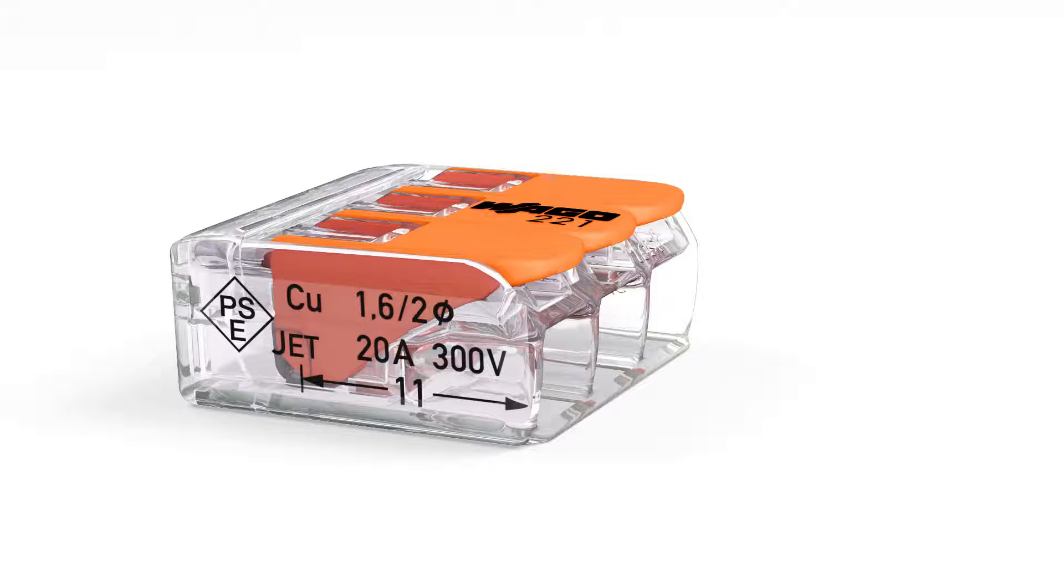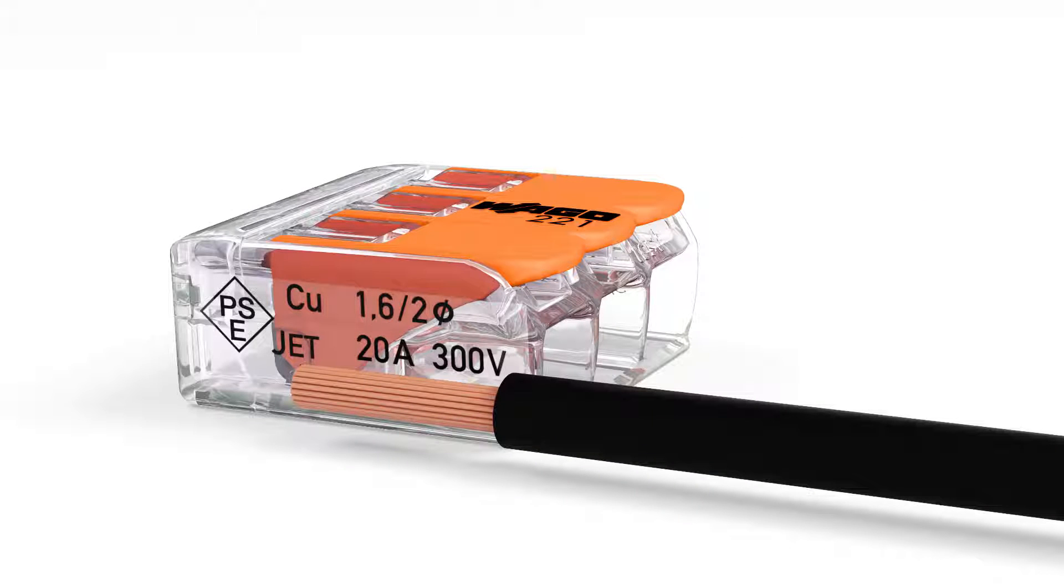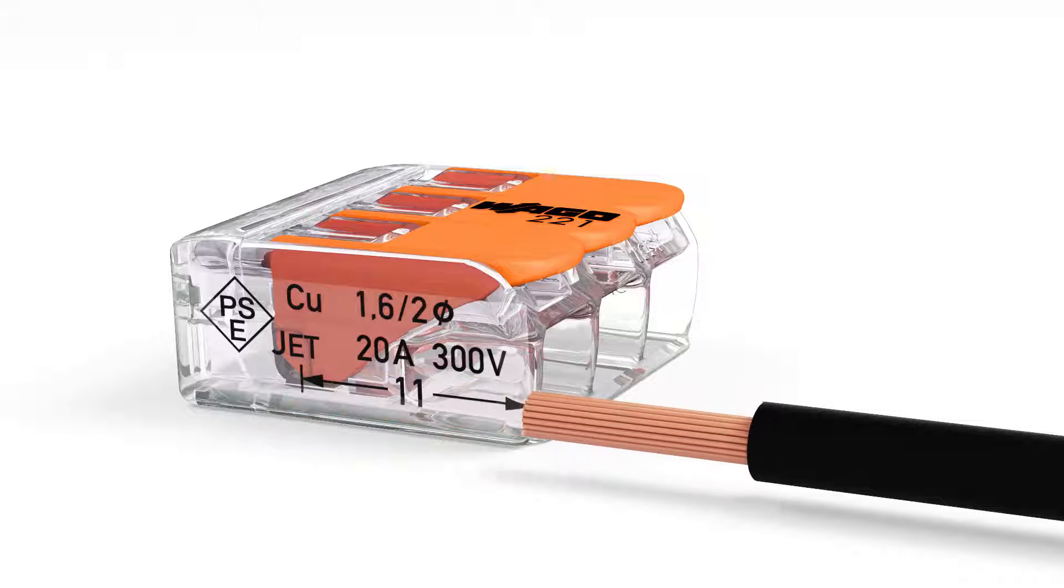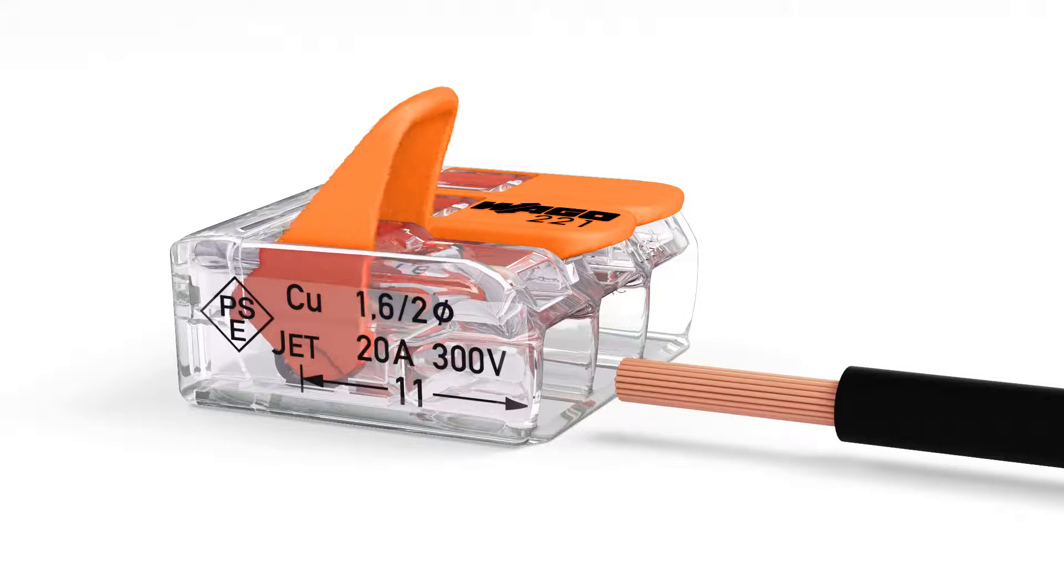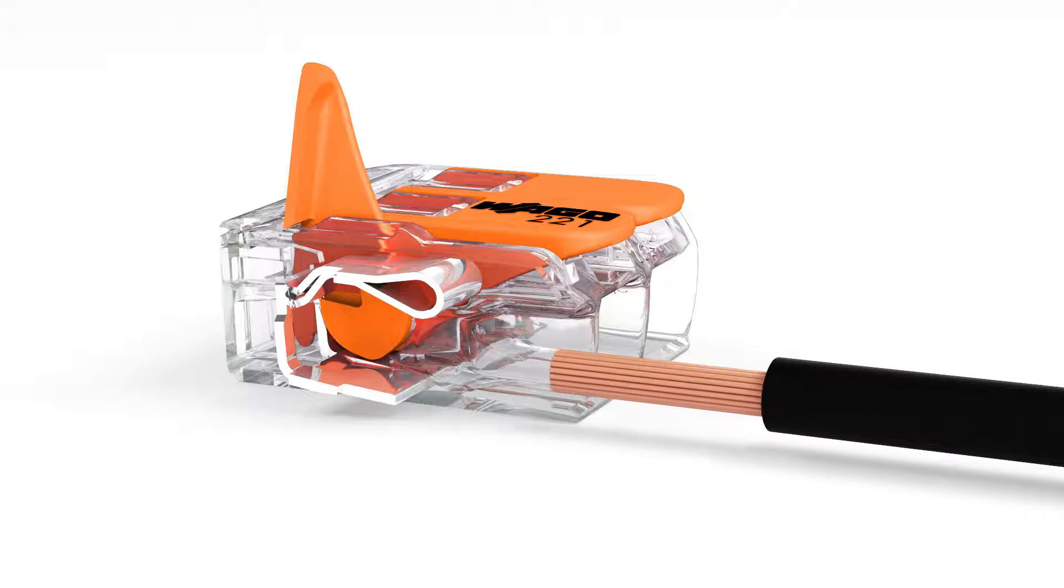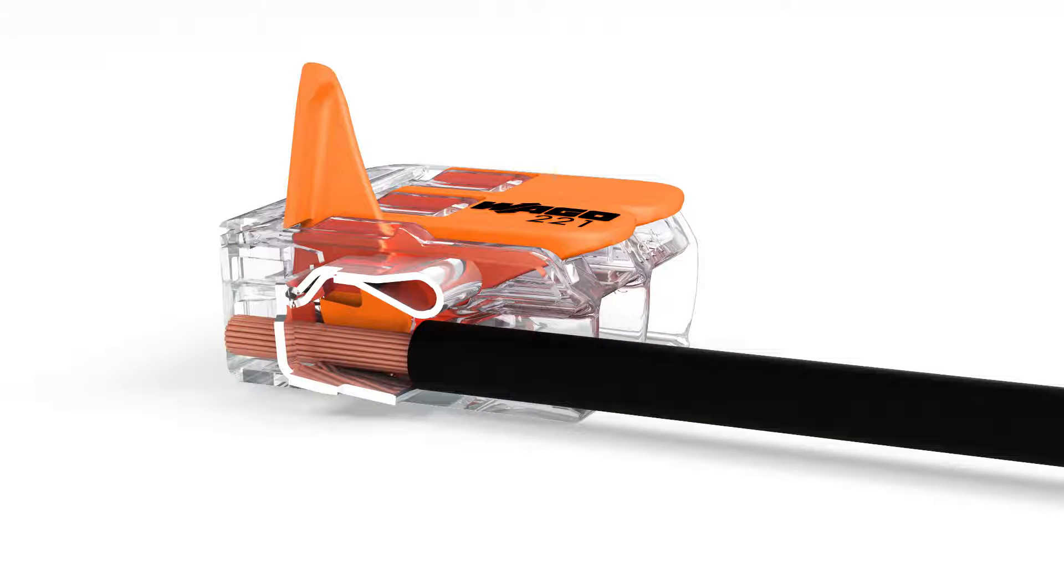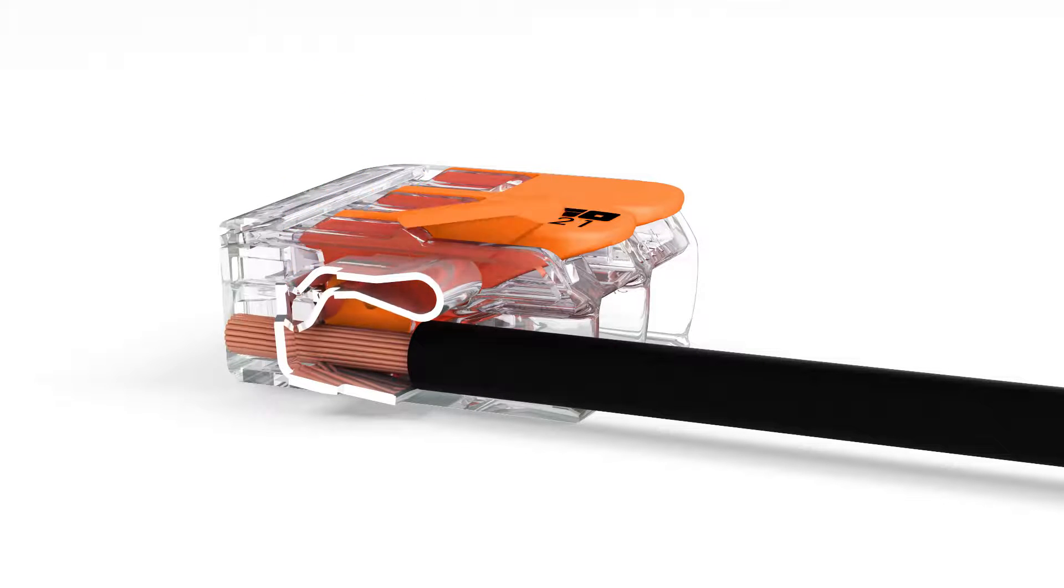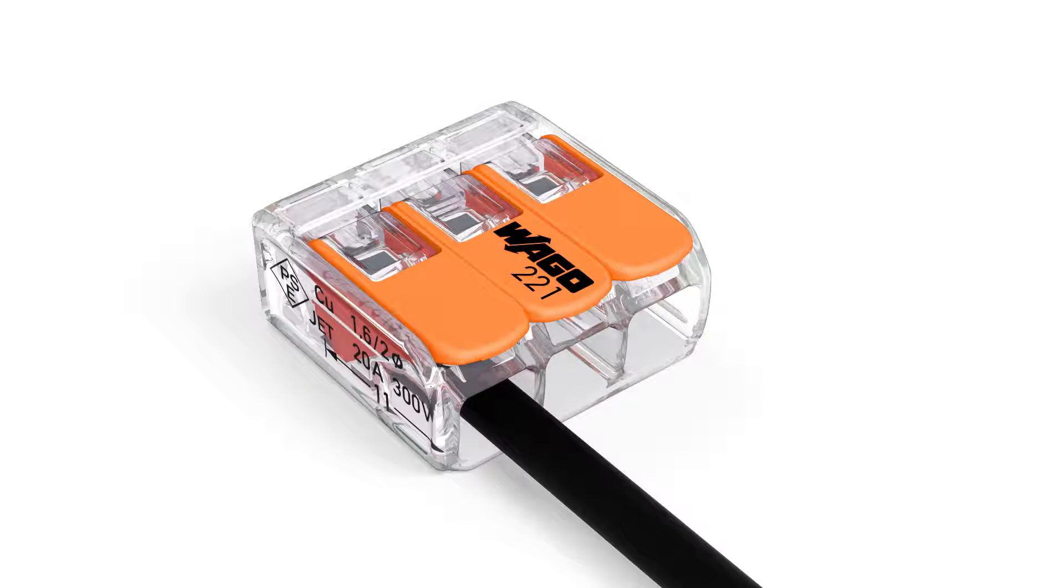Wiring is very easy. Strip conductor to 11 millimeters or 0.43 inches. Open the clamping unit via integrated lever. Insert conductor. Compared to its predecessor, the 222 series, the 221 series operating levers can now be opened using noticeably less force. Then lower the lever to close the clamp.